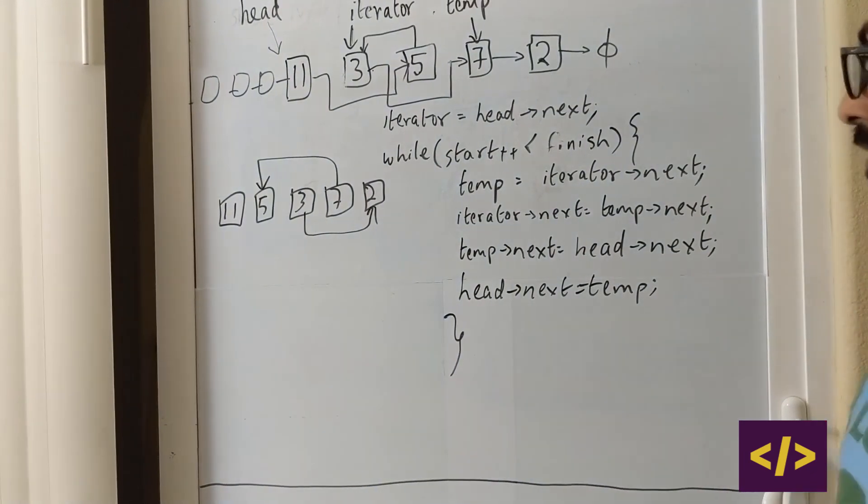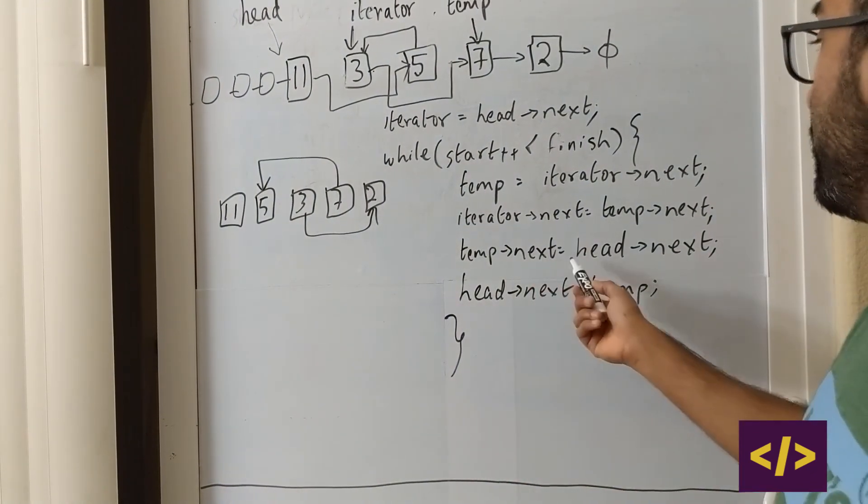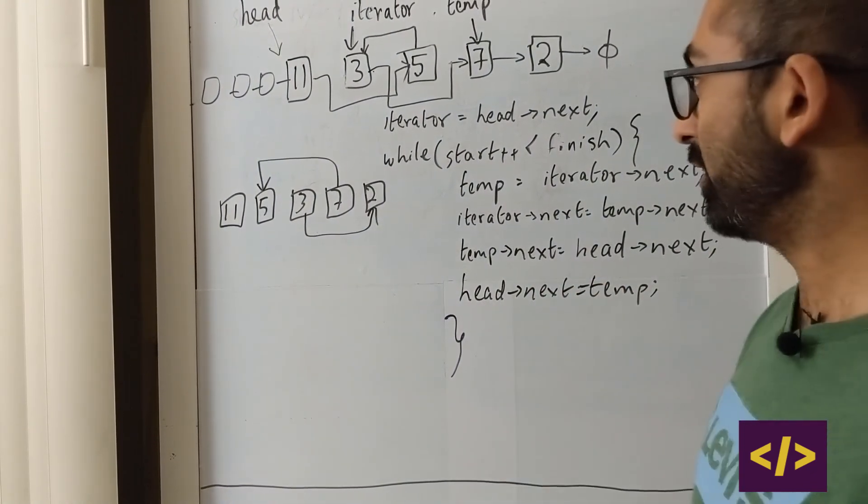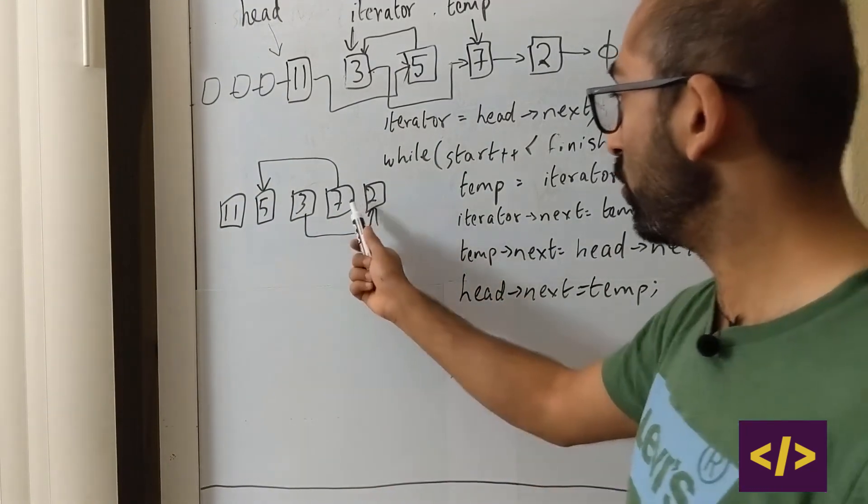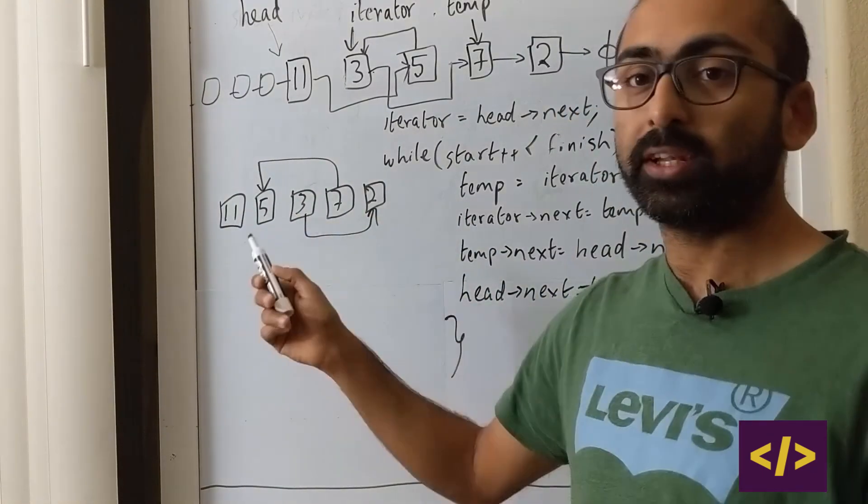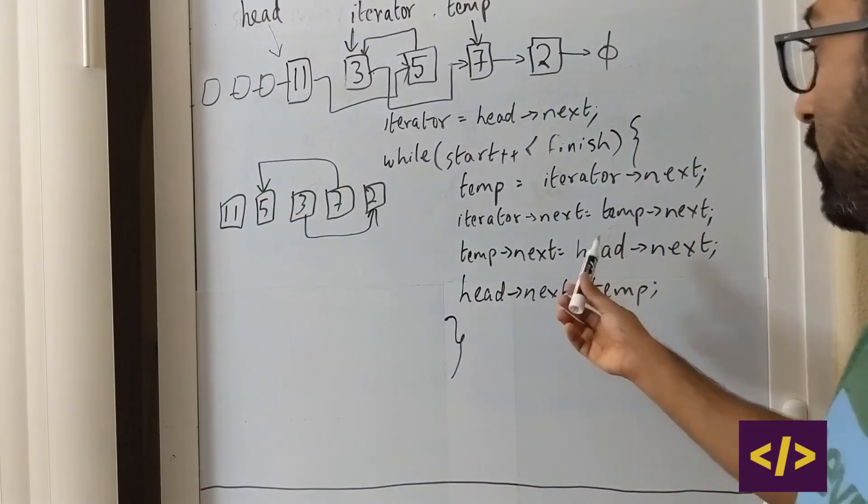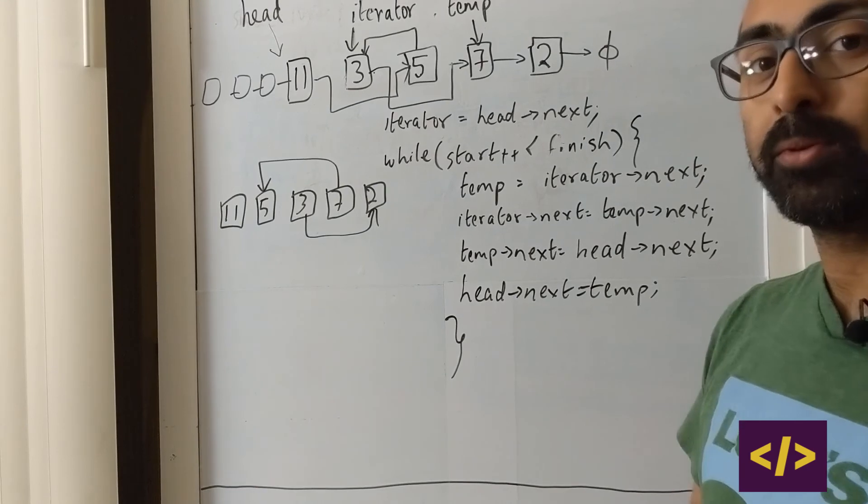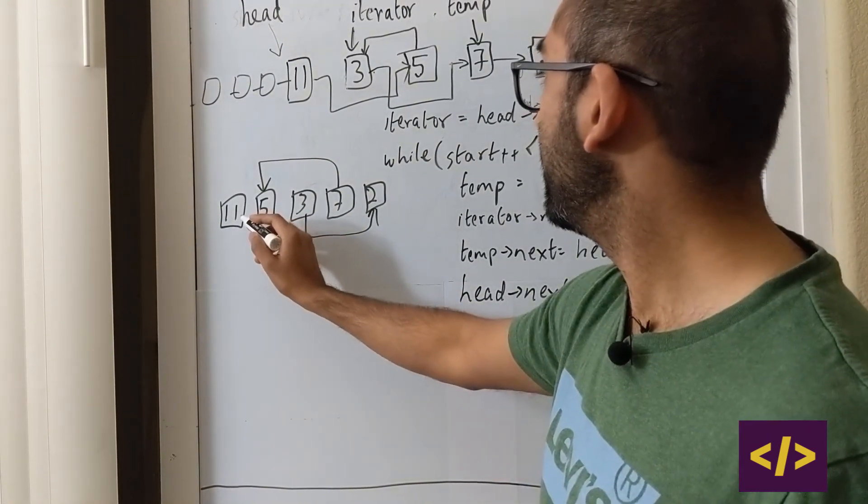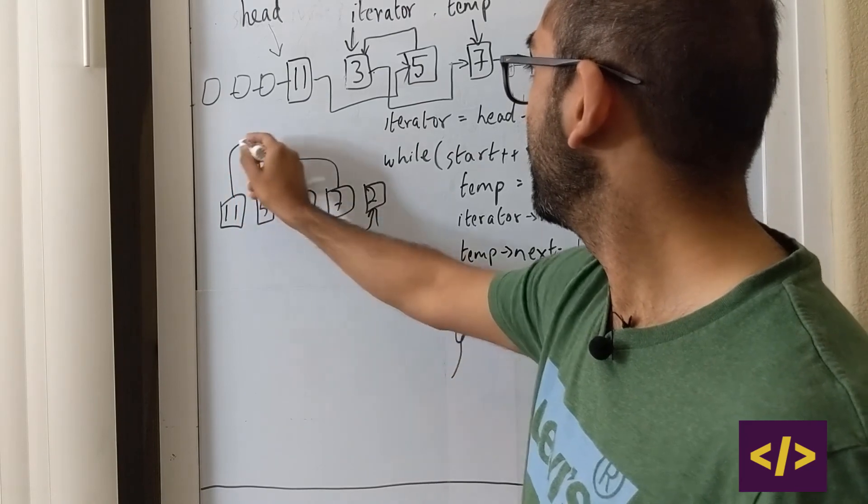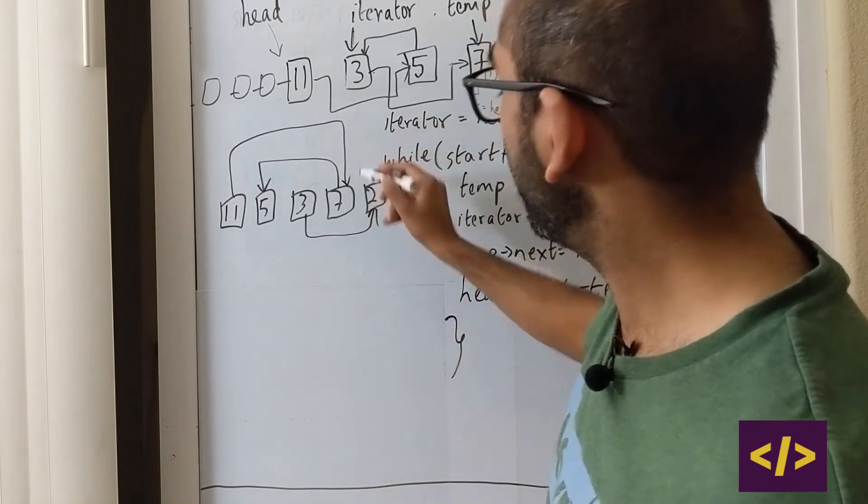If we had said temp of next is equal to iterator, it would point to 3. And that's wrong, right? Because we want him to be sitting in between 1 and 5. So that's why we have to use head of next. Finally, what do we do? We break this link and say that 1 points to 7.